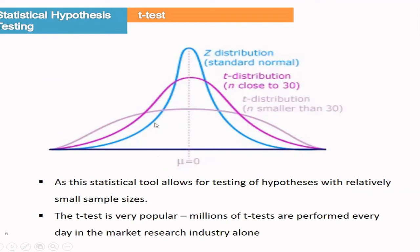This is why the T-distribution is very popular, especially for market research and many other cases, because you can use T-distribution or T-Test for small samples. When the sample size is 30 or less than 30, the tail on both sides becomes thicker and wider, making it a T-distribution. Now we will do some examples on how to do the T-Test.